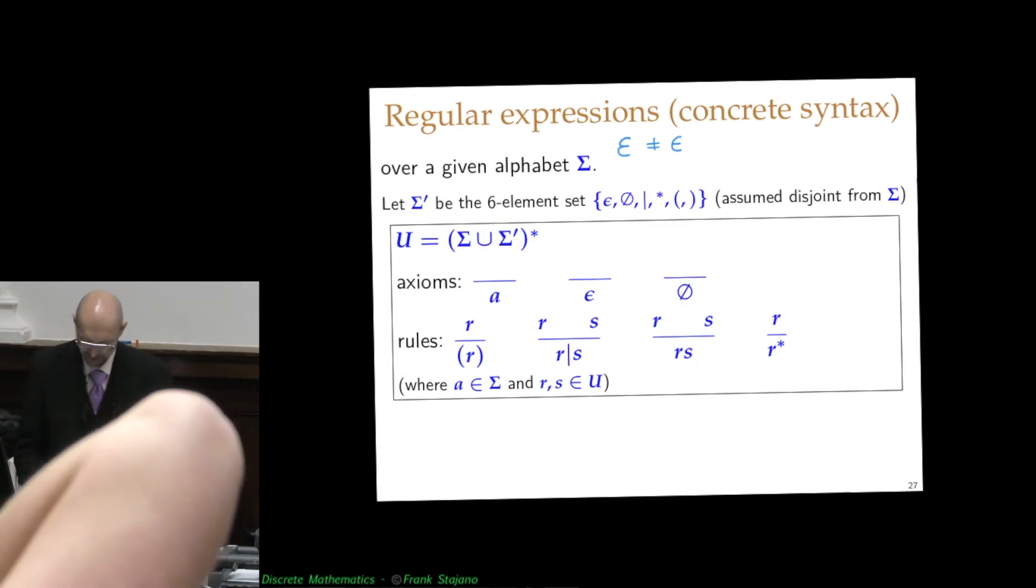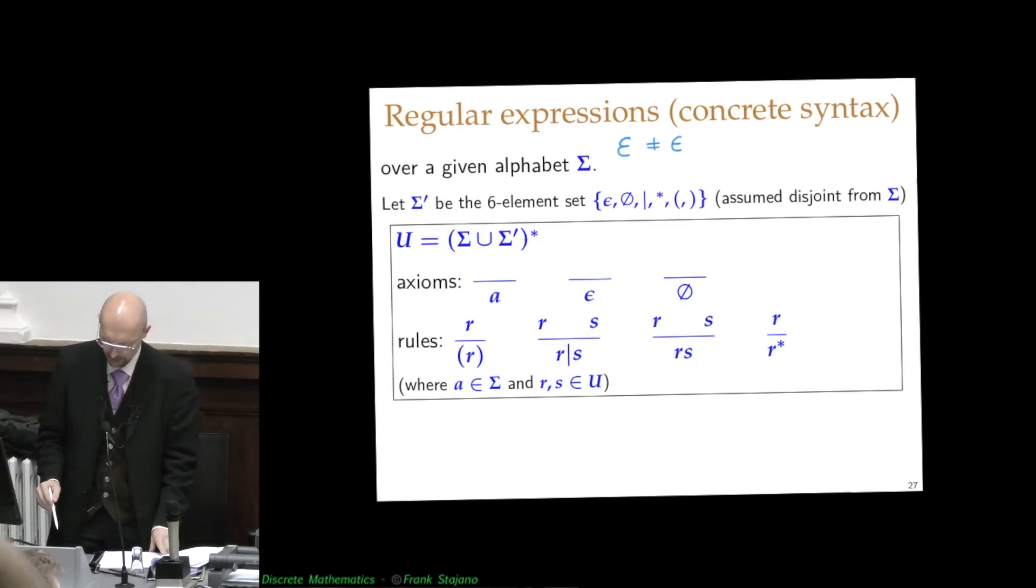This asterisk means repeat zero more times. And these brackets are there to express precedence. So the regular expressions are sets of strings over the alphabet given by the alphabet of your basic strings and the meta symbols.